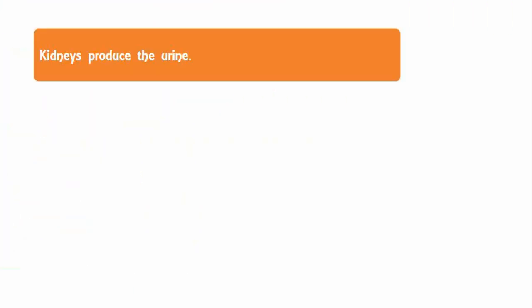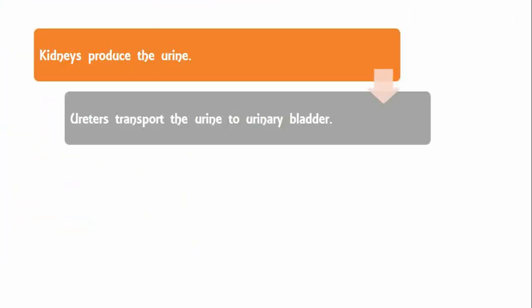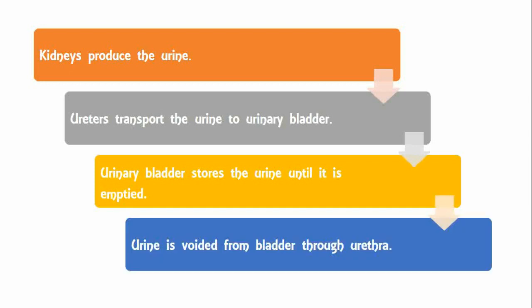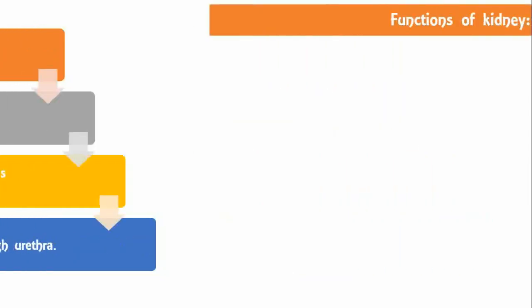Kidneys produce the urine. Ureters transport the urine to the urinary bladder. The urinary bladder stores the urine until it is emptied. Urine is voided from the bladder through the urethra.